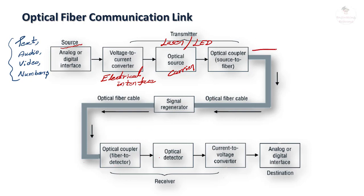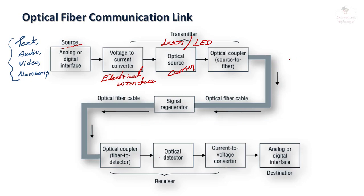Once the optical signal is coupled to the transmission link, it travels through the optical fiber cable channel. This optical fiber cable is the guided transmission medium, and the signal propagating inside it follows ray theory. In upcoming videos we will see the principle of light propagation over the optical fiber cable, as well as the structure and types of optical fiber cable.